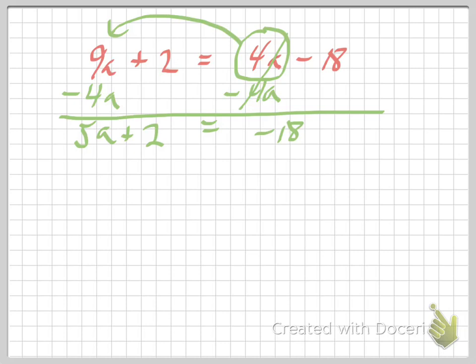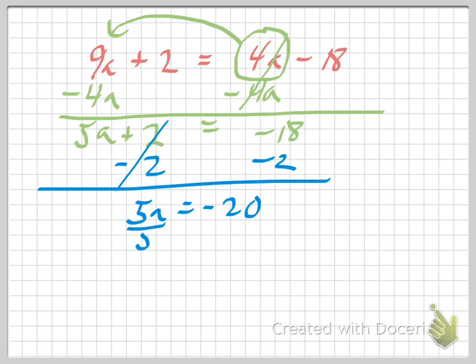So let's switch colors and solve this. We'll subtract 2 from both sides. Draw a big line. We get 5a equals negative 20. And now what do I have to get rid of? Divide both sides by 5. And you get a equals negative 4.